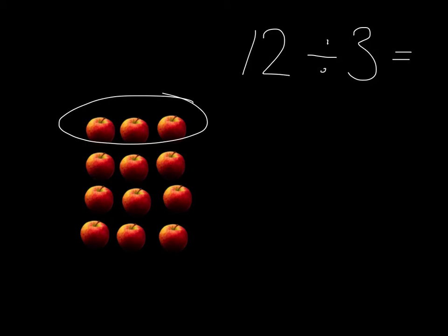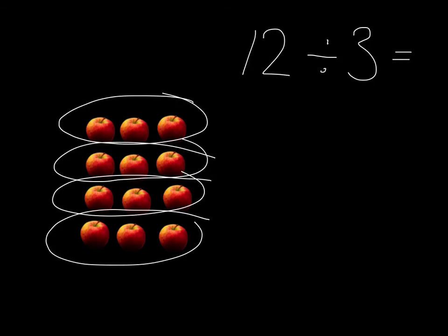Well, there's the first packet of 3 apples, there's the next group of 3 apples, there's the next group of 3 apples, there's the next group. So we've got 1, 2, 3, 4 groups, 4 packets. And so 12 divided by 3 is equal to 4.